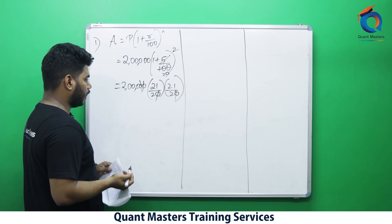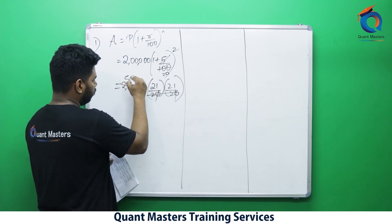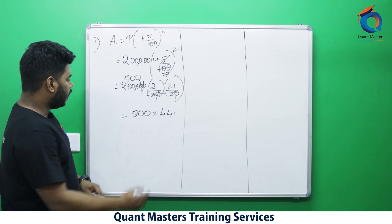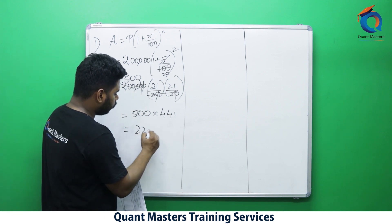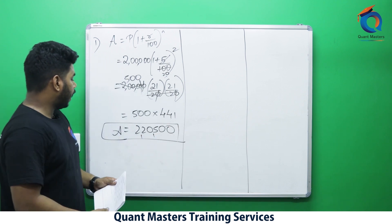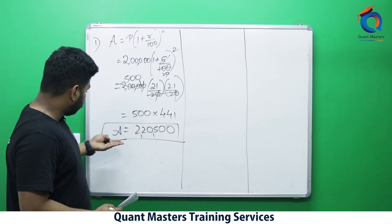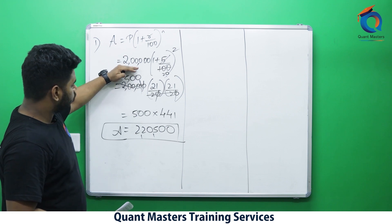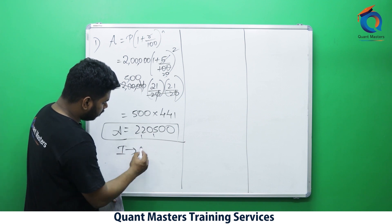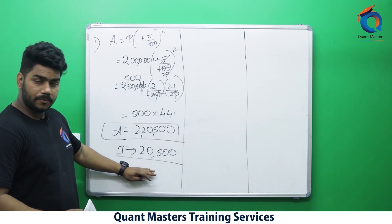Simplifying: cancel the zeros, 2,00,000 × (21/20)^2 becomes 500 × 441. That gives 2,20,500. So the amount is 2 lakh 20,500 rupees. The principal was 2 lakh, so the compound interest is 20,500 rupees. This is method number one, used by about 70% of people.